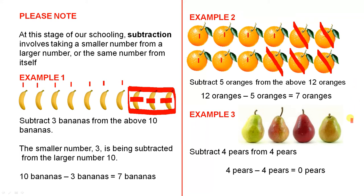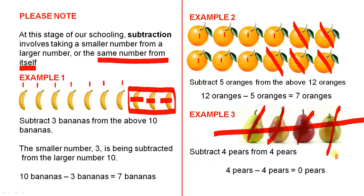Now this is example three, where we're going to subtract the same number from itself. So here we have four pears. Subtract four pears from four pears. In other words, we start off with four pears, we take four away, they no longer exist, they're gone. In other words, there are no pears left. So if we have a particular number and we subtract or take away the same number, the answer will be zero.